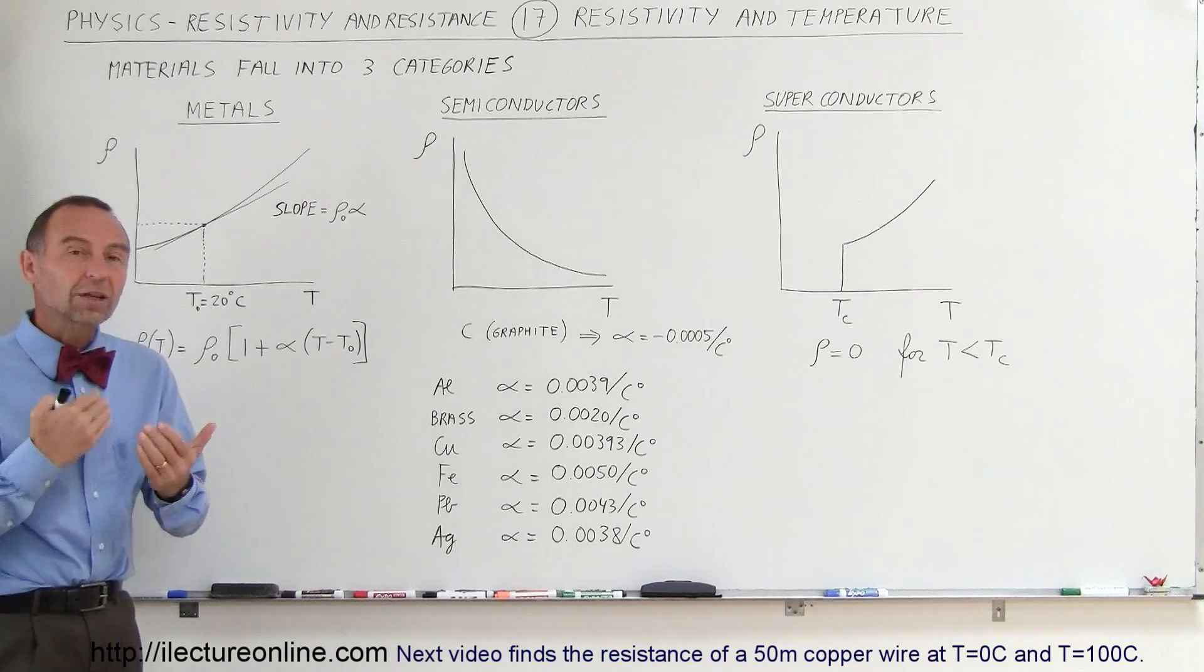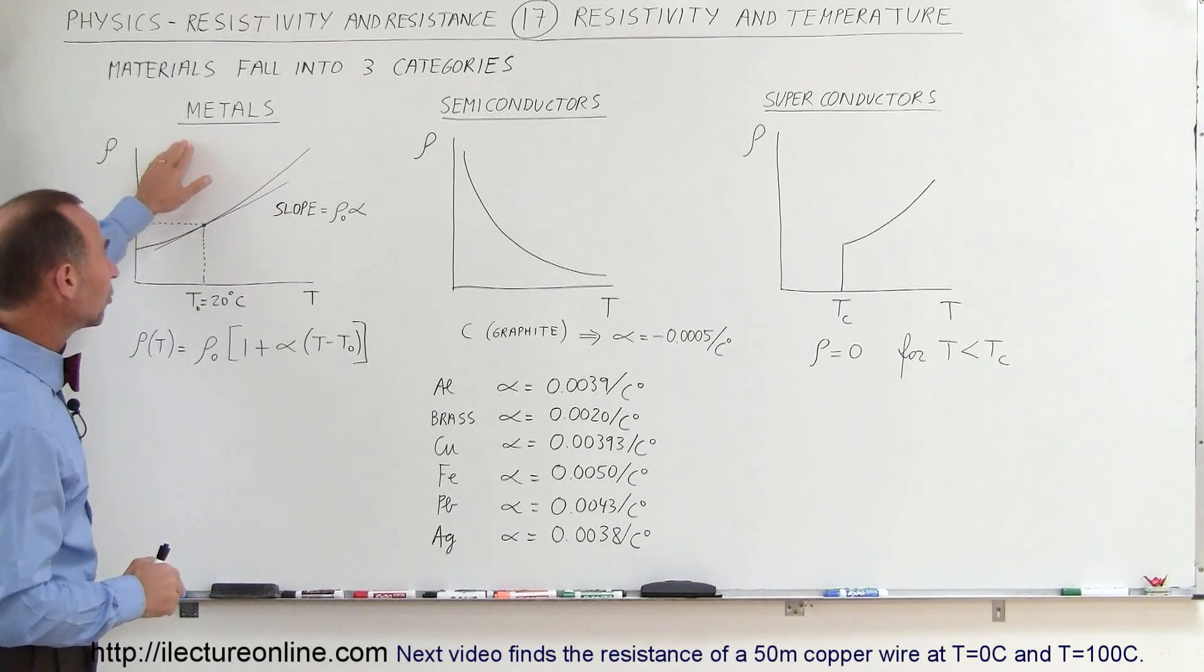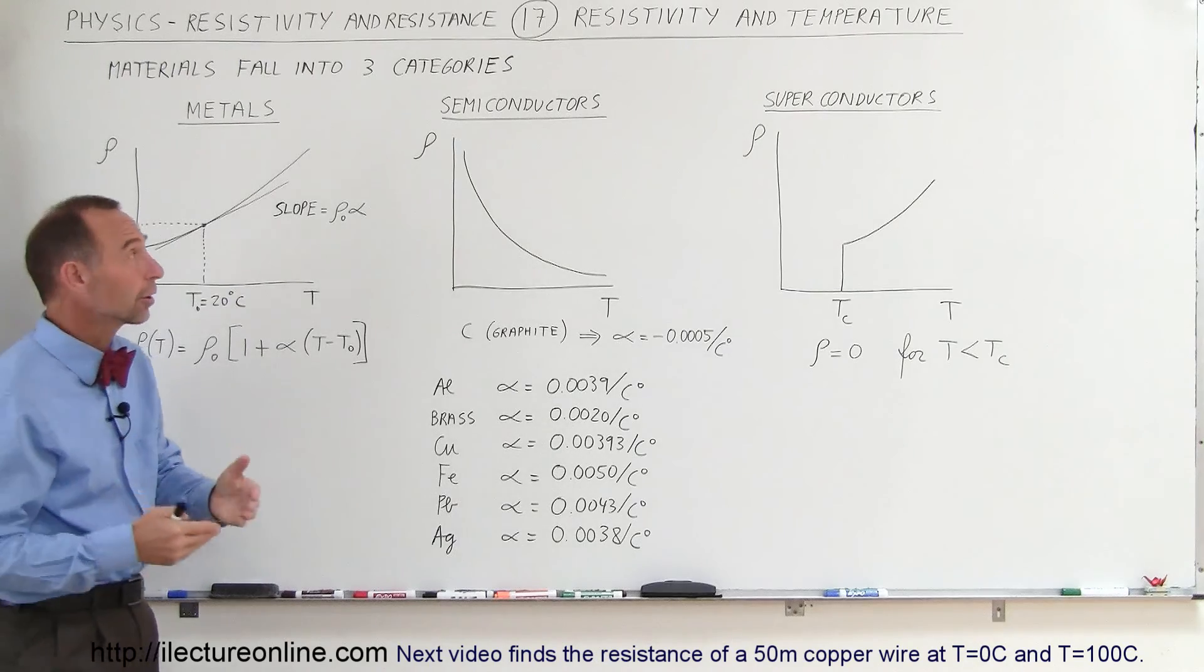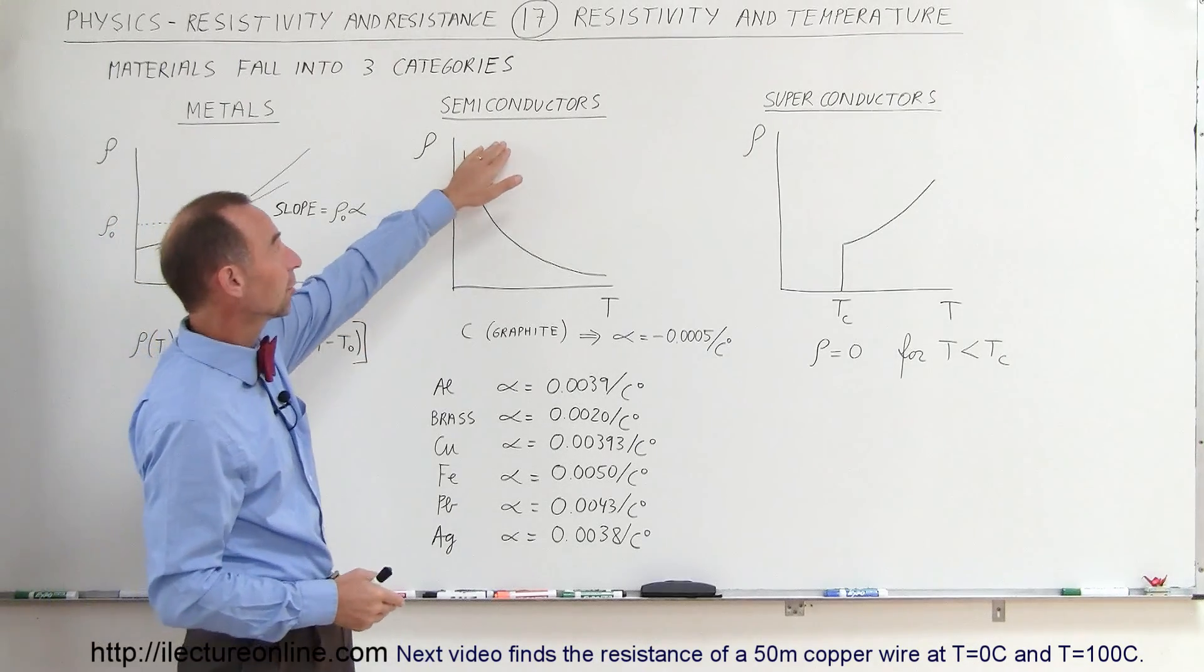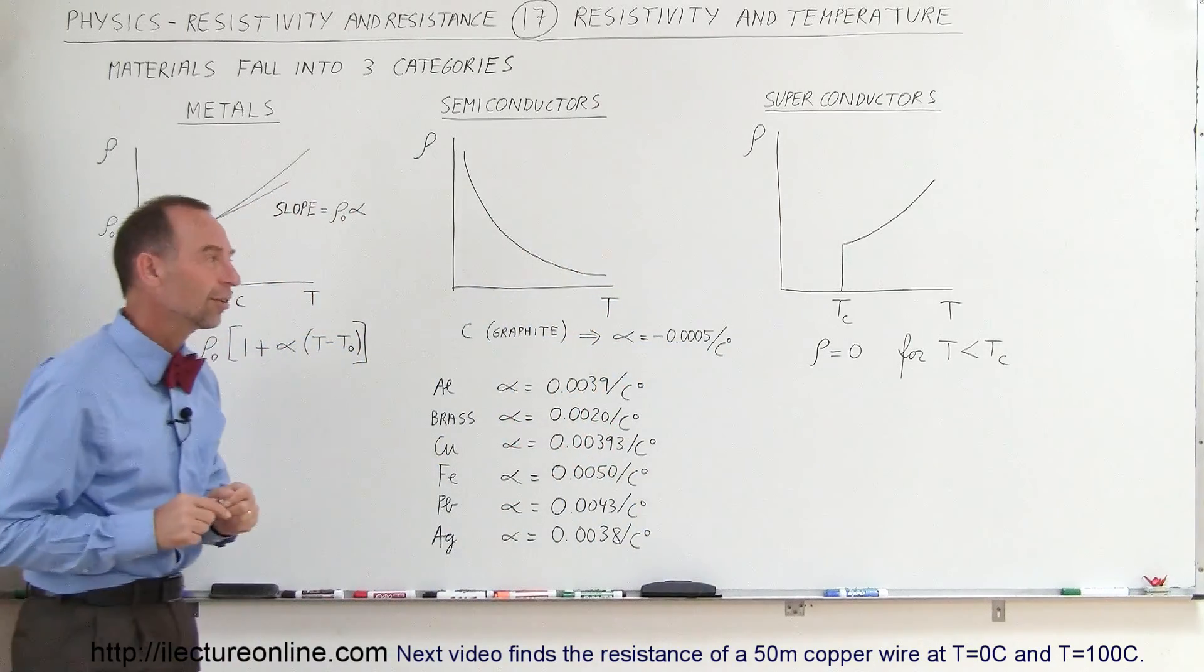For conductivity, materials fall into three different categories. One is called metals, which typically are very good conductors. Then we have what we call semiconductors, and then we have something called superconductors, which is a very special category in itself.